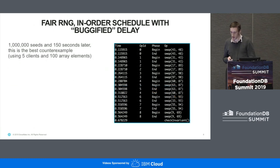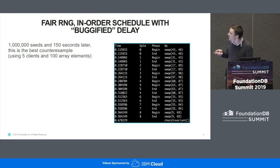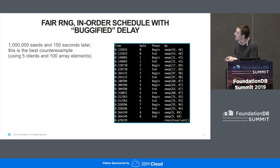I tried this with one million seeds, and this is the shortest counter example it came up with, which is a little bit expensive to follow in terms of what's going on, because most of this isn't interesting. There's kind of where it happens, and then you finally check the invariant eventually.